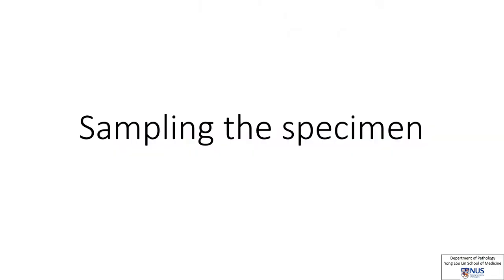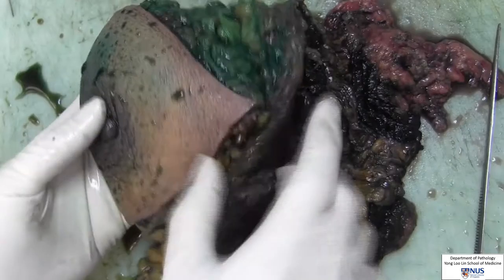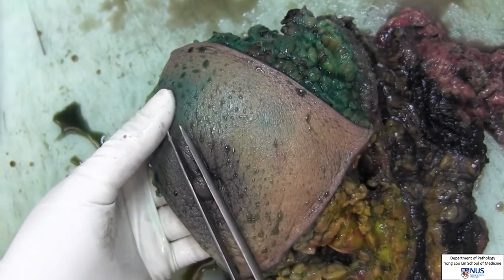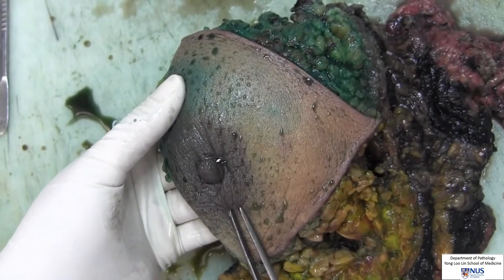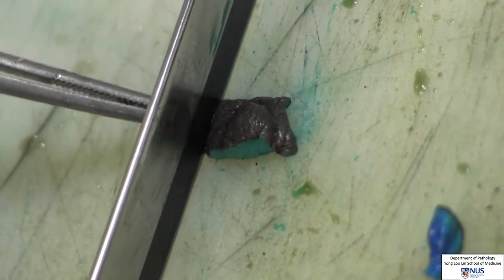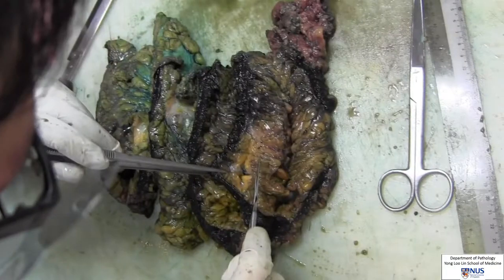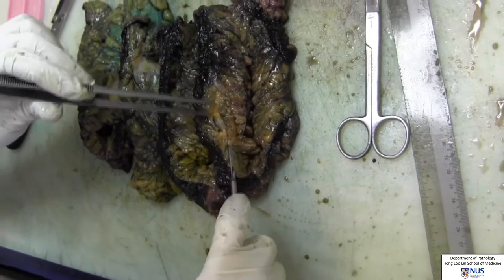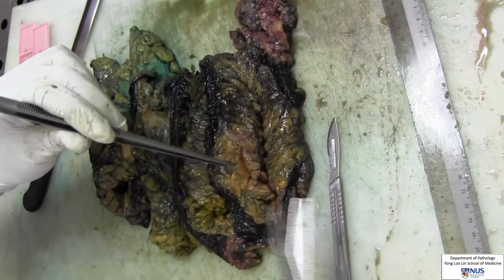We move on to sampling of the breast specimen. The benign regions will be sampled first before the tumour to avoid contamination of benign tissues with residual malignant tissues from the instruments. We will sample the nipple to assess for Paget's disease, then proceed to sample normal breast tissue from quadrants of the breast uninvolved by the tumour.